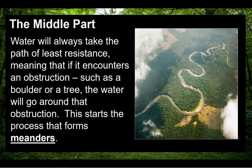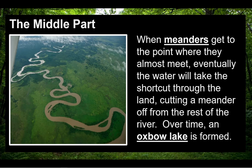Water will always take the path of least resistance, meaning that if it encounters an obstruction such as a boulder or a tree, the water will go around that obstruction. This starts the process that forms meanders. When meanders get to the point where they almost meet, eventually the water will take the shortcut through the land, cutting a meander off from the rest of the river. Over time, an oxbow lake is formed.